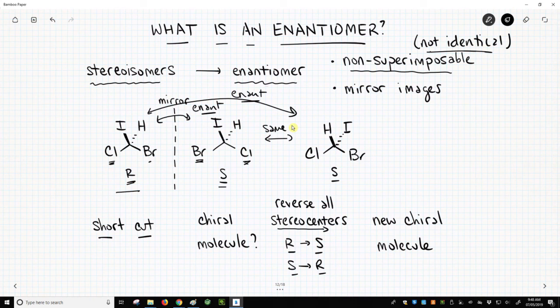Now there's a shortcut. If you have a molecule that is a chiral molecule, it contains a stereocenter. There's a shortcut to drawing the enantiomer. You simply reverse all the stereocenters, and all is important. If you have multiple stereocenters, you have to invert every one of them. So how do we do that?